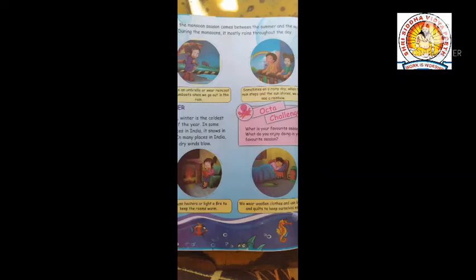In India, the monsoon season comes between summer and autumn. During the monsoon, it mostly rains throughout the day. We use an umbrella and wear a raincoat and gum boots when we go outside. Sometimes, on a rainy day, when the rain stops and the sun shines, we may see a rainbow.